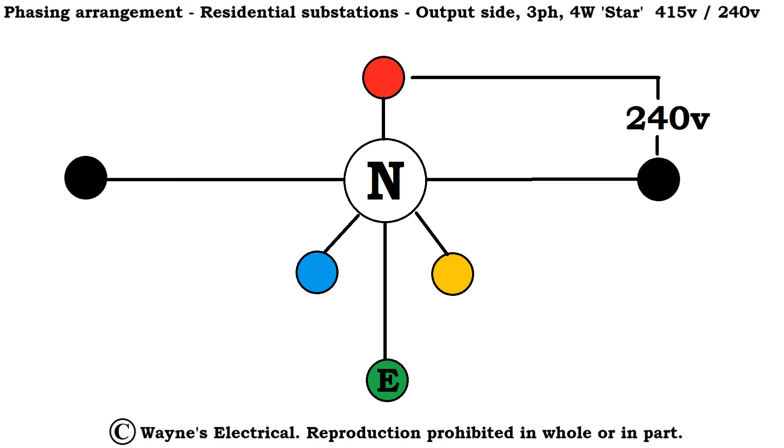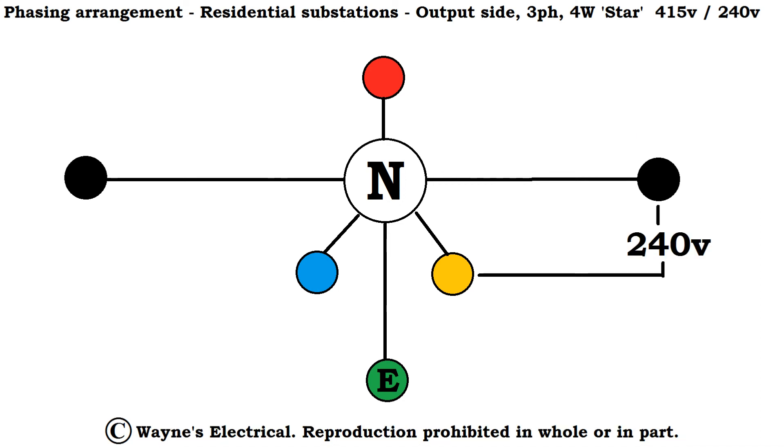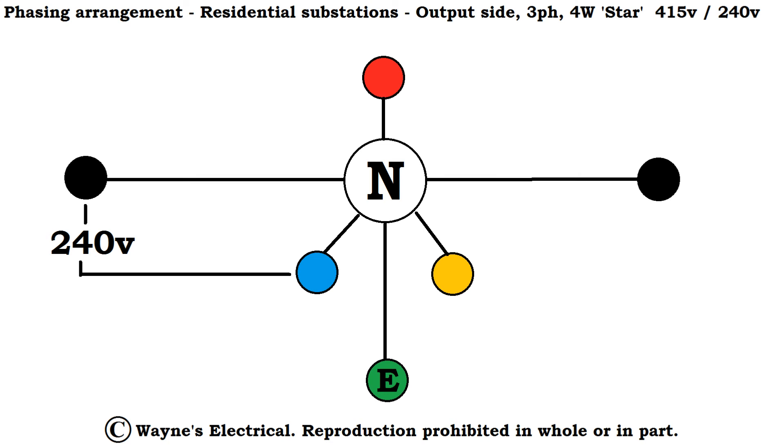But supposing your house is connected on phase yellow and neutral, well it looks a bit like this then. That's right, 240 volts once again. And you know where this is going, if you have this all connected on phase blue to neutral, then it looks a bit like this. There we are, 240 volts once again. And that's what's called a three phase four wire system.